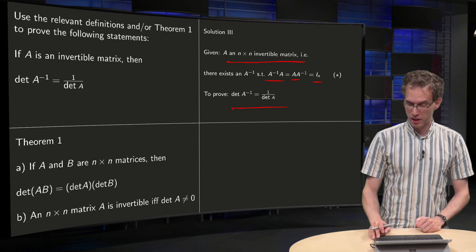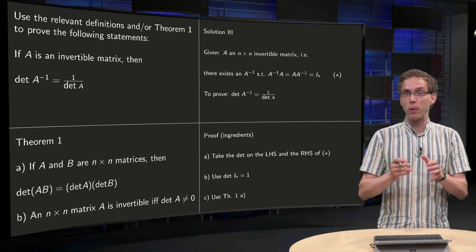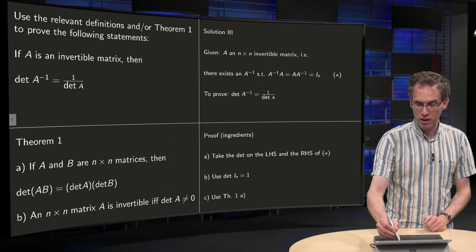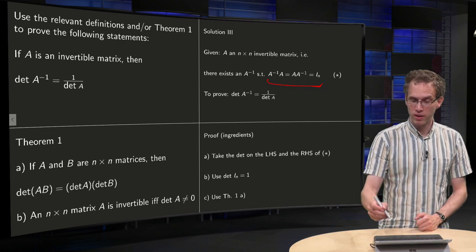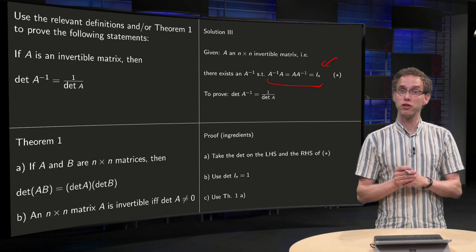So what are our key ingredients? What can we do? Well, we want to know something about determinants. Because we know the definition, so what can we do? We can take determinants on left and right. That's a first step.